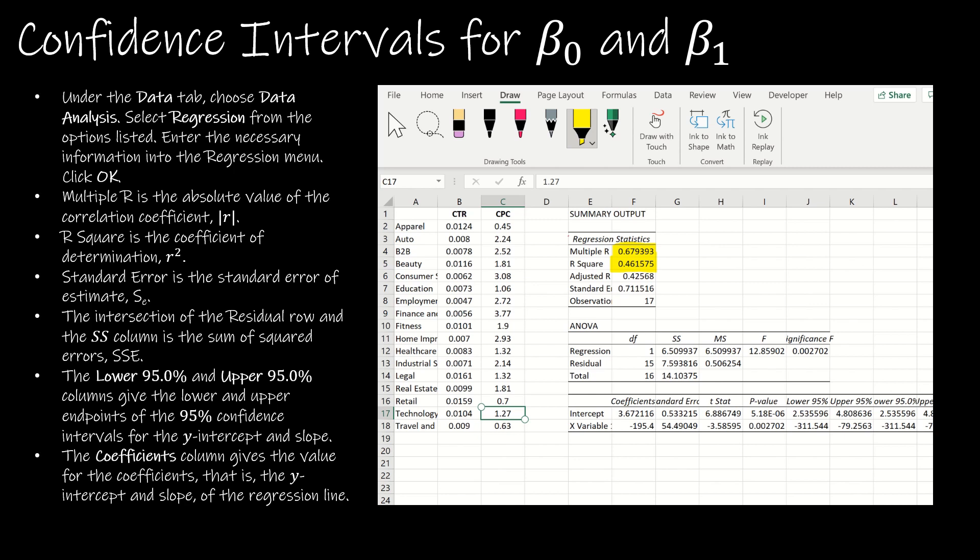Here is the standard error, which is the same standard error that we just worked somewhat hard to find in our last video. And then we're going to look at the intersection of the residual row and the SS column right here. That value is the sum of squares error, so SSE.